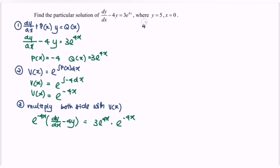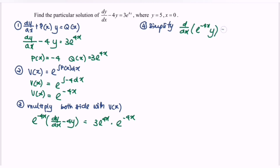Step number four: simplify, and we will have d/dx of e^(negative 4x) multiplied with y equals 3.